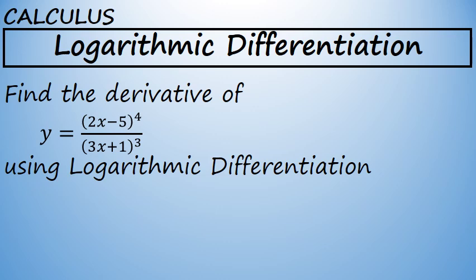Find the derivative of y equals 2x minus 5 to the 4th power all over 3x plus 1 to the 3rd power using logarithmic differentiation. Logarithmic differentiation is a process that can be used to simplify the derivative of complicated expressions. In this problem, the quotient rule could be used, but inside the quotient rule you would have to apply the chain rule twice or expand the numerator and denominator. Either way, it would require a lot of work. Logarithmic differentiation can simplify this process.